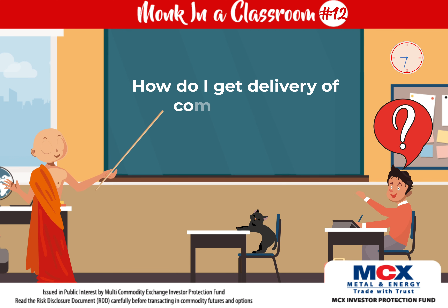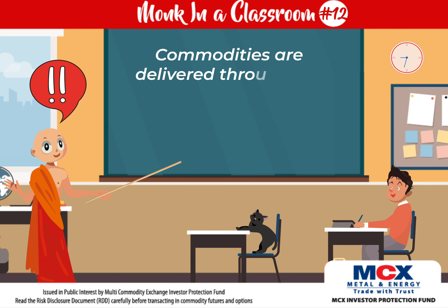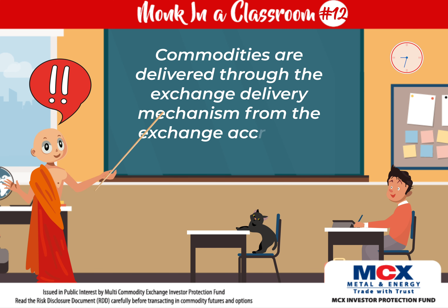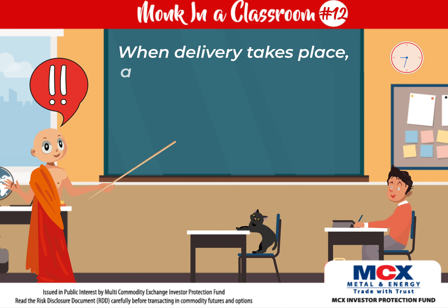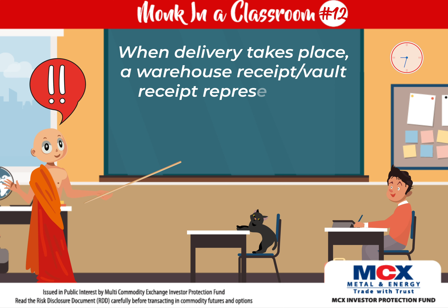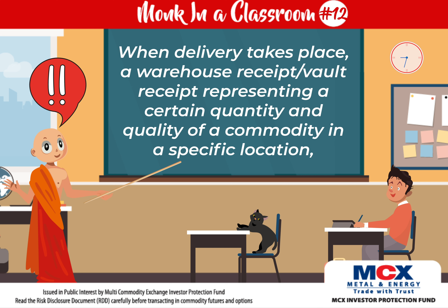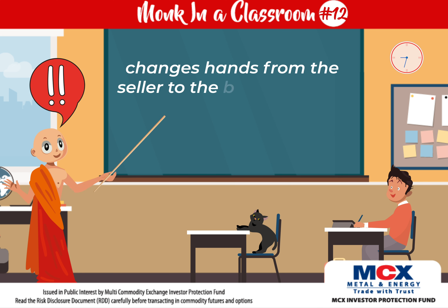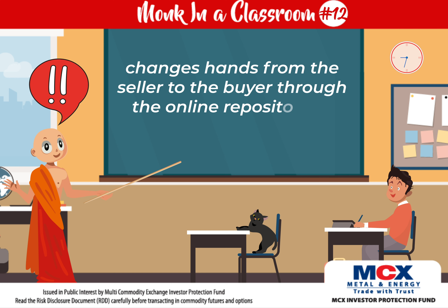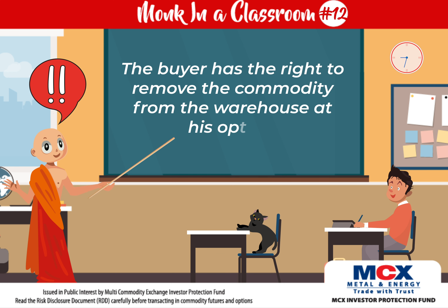How do I get delivery of commodities? Commodities are delivered through the exchange delivery mechanism from the exchange-accredited warehouse. When delivery takes place, a warehouse receipt or vault receipt representing a certain quantity and quality of a commodity in a specific location changes hands from the seller to the buyer through the online repository or COMRIS system. The buyer has the right to remove the commodity from the warehouse at his option.